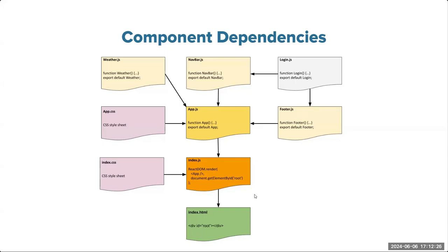At the bottom is the index HTML. You have to bootstrap your React application to the DOM — any HTML you choose, in this case index.html. We inject the entire app into any element of your choice given an ID, just like we manipulate the DOM using JavaScript. We inject index.js, which is the entry point to your React program, and then all other components get injected to that entry point.